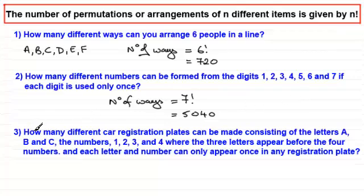Now, in number three, this is the one that I was saying to be careful about. Definitely encourage you to have a go at this one. We've got how many different car registration plates can be made consisting of the letters A, B and C, the numbers one, two, three and four, where the three letters appear before the four numbers.